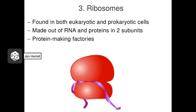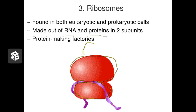Ribosomes aren't technically membranous organelles, but they're often found attached to membranes, so we'll talk about them here. Ribosomes are made of RNA and proteins kind of mushed together. They're made of two subunits — this one's called a large subunit, and the smaller one is called the small subunit. It looks kind of like a burger, or kind of like a snowman without a head. This little machine makes proteins for the cell, and so again, this is something that all cells have to have to survive.